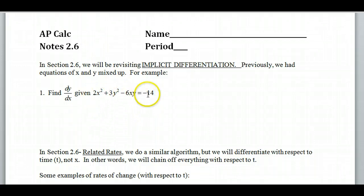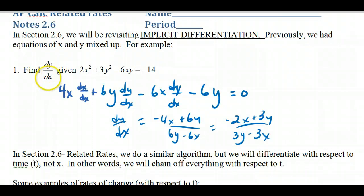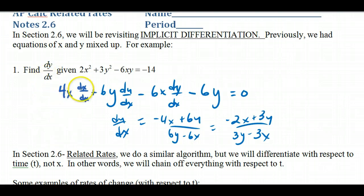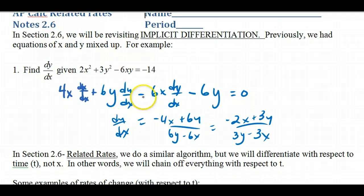Start with this first one and do the implicit differentiation on it. We found dy/dx — the derivative with respect to x — given 2x² + 3y² - 6x, where the last term uses the product rule, equal to negative 14. When I take the derivative of 2x² I get 4x, and we have to chain off. With x we don't chain off because we're differentiating with respect to x, but if we did it would be dx/dx which is just 1. The derivative of 3y² is 6y, and I have to chain off the y: dy/dx. Then there's a product rule on the last term. So we chain off all the y's and then solve for dy/dx.